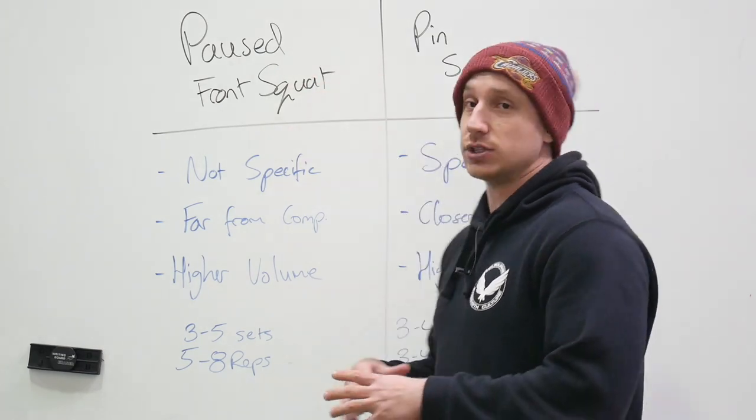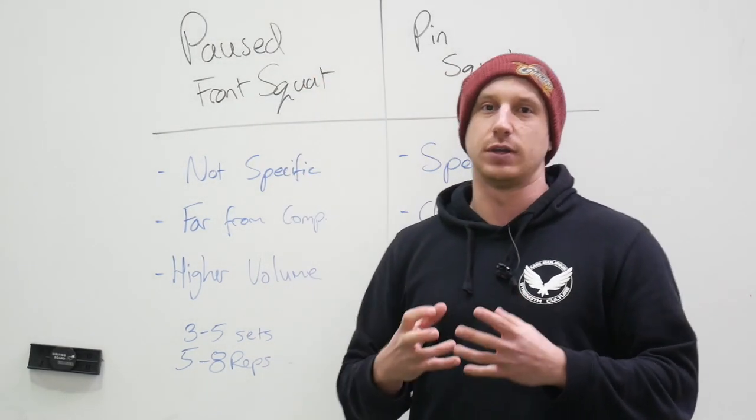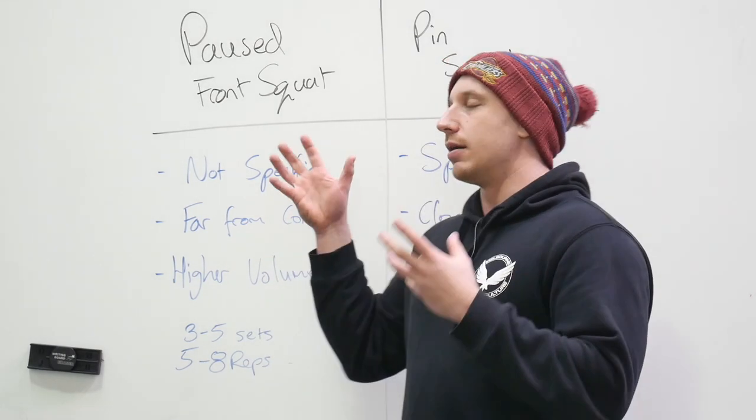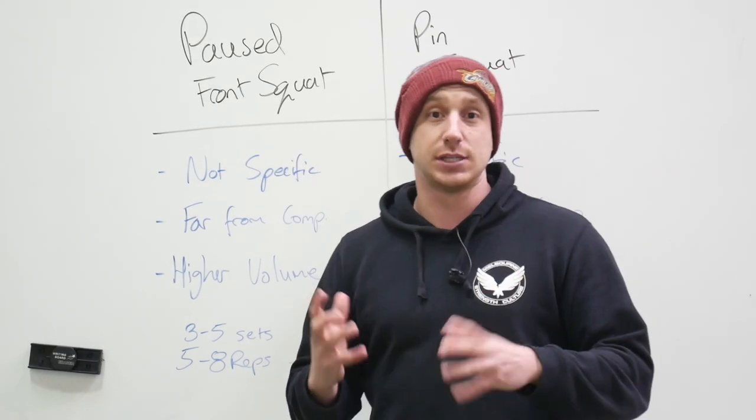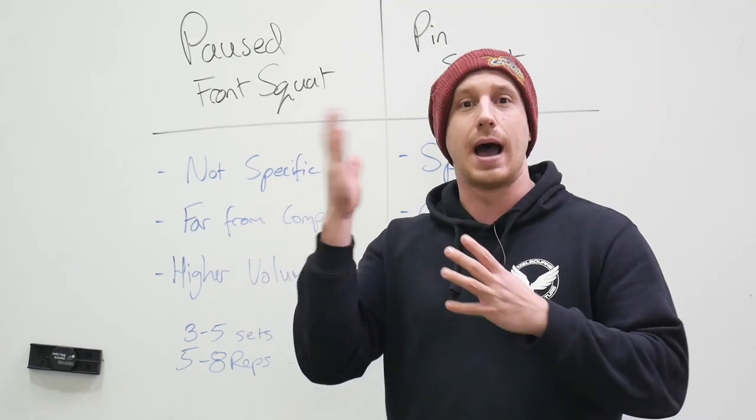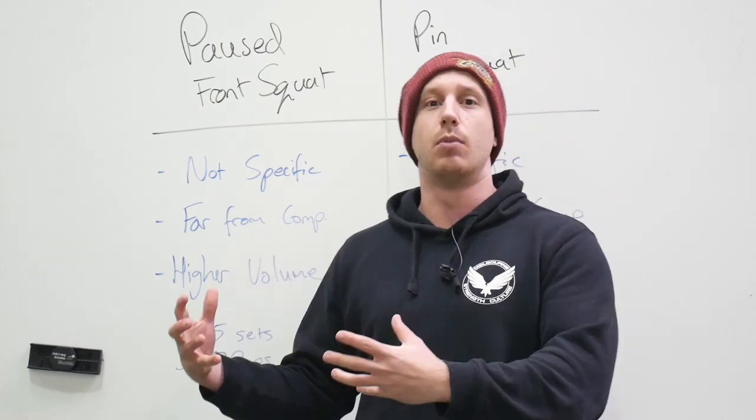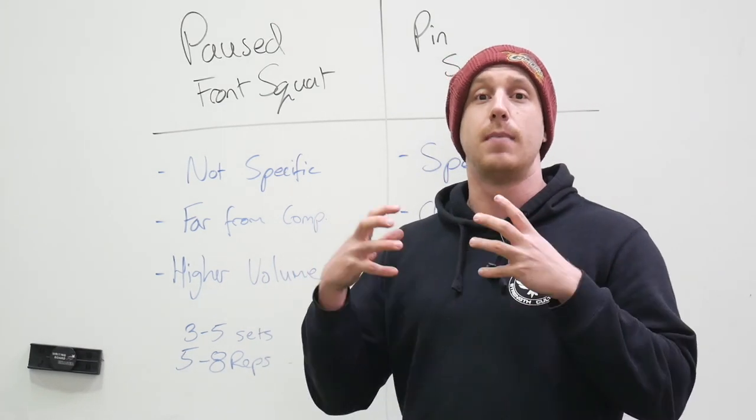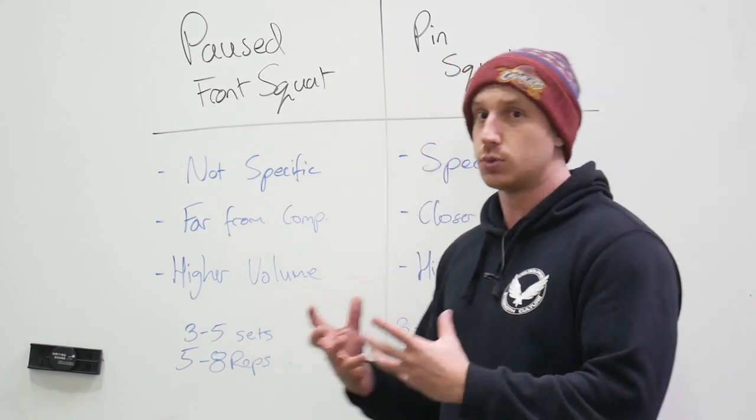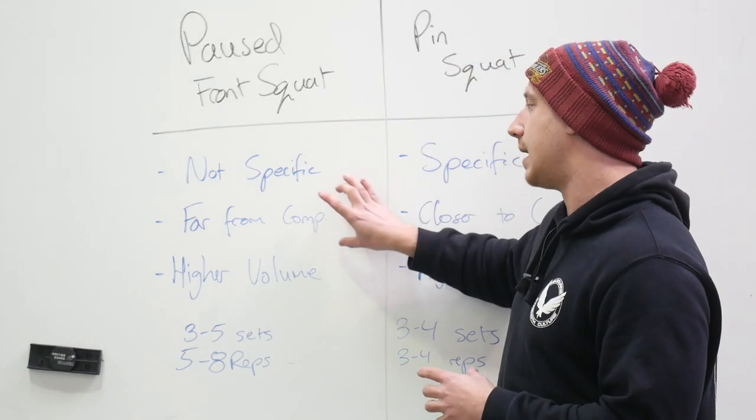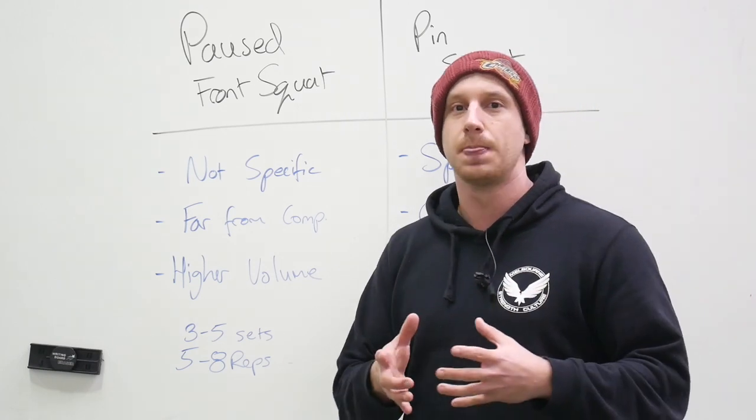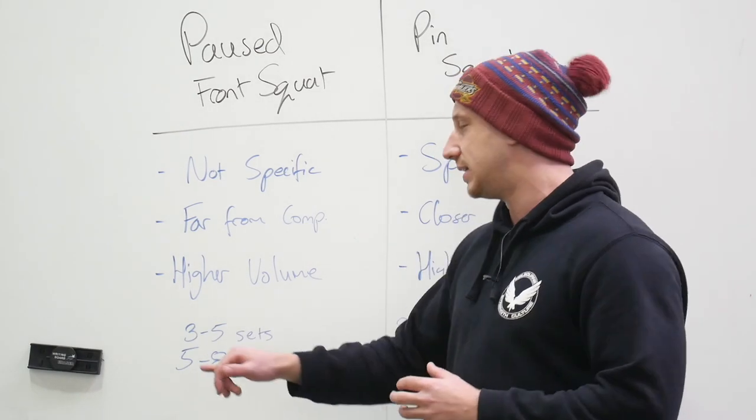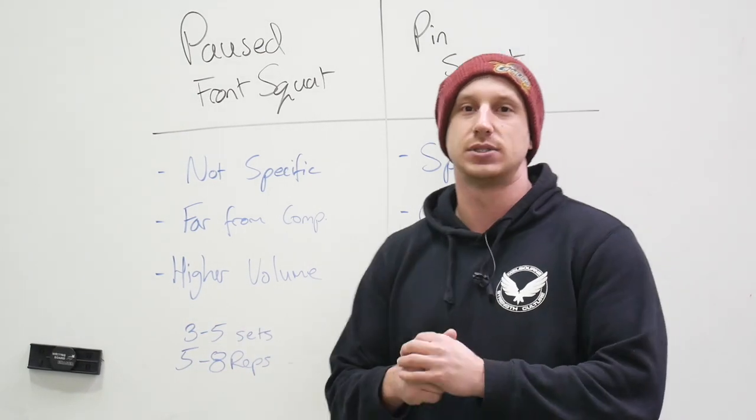So first we'll look at paused front squat. We need to remember that this is not a very specific movement to the end goal of a competition squat. So for most people that will be a low bar squat. The anterior load of the bar's placement will mean that you're quite upright with your torso angle. Obviously the knees are going to be much further forward than your actual competition squat. But as a result of this, we're actually going to be able to build and grow the strength in the quad, which is what we want. So we need to remember that it's non-specific. So for that, it's going to be far away from competition. And in order to build muscle and strength, we're going to use a higher volume. So a couple of guidelines here would be three to five sets of five to eight reps in your program.